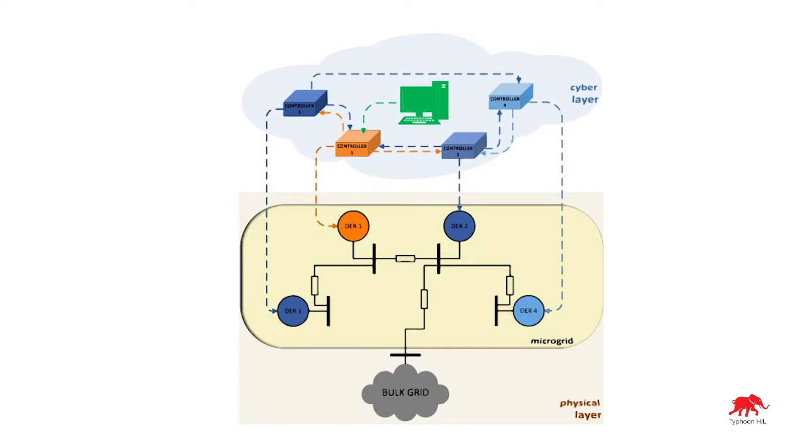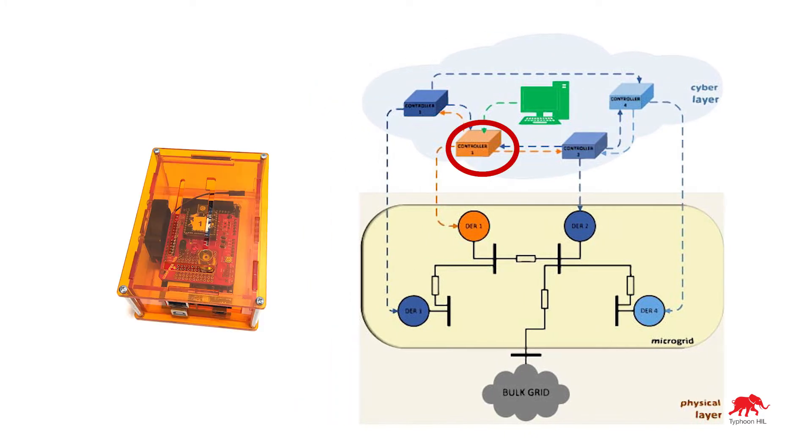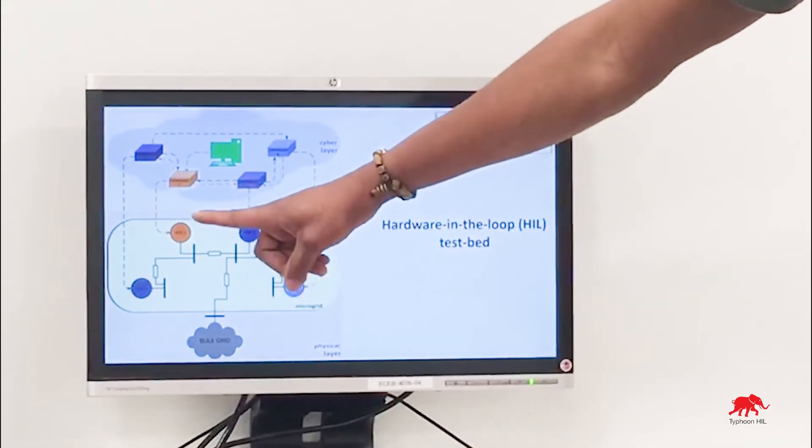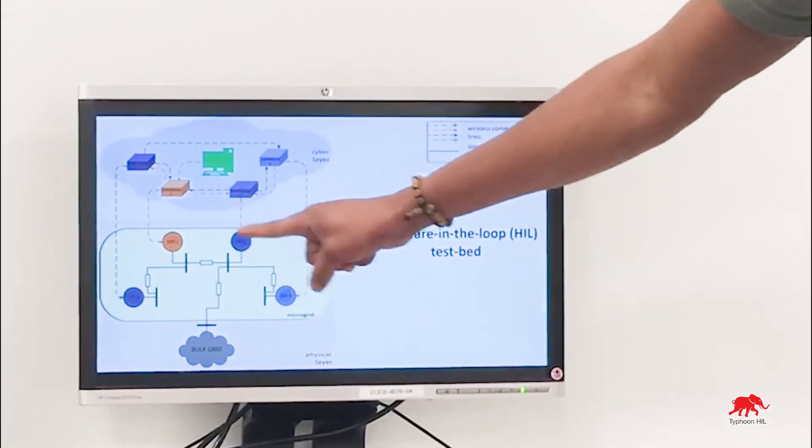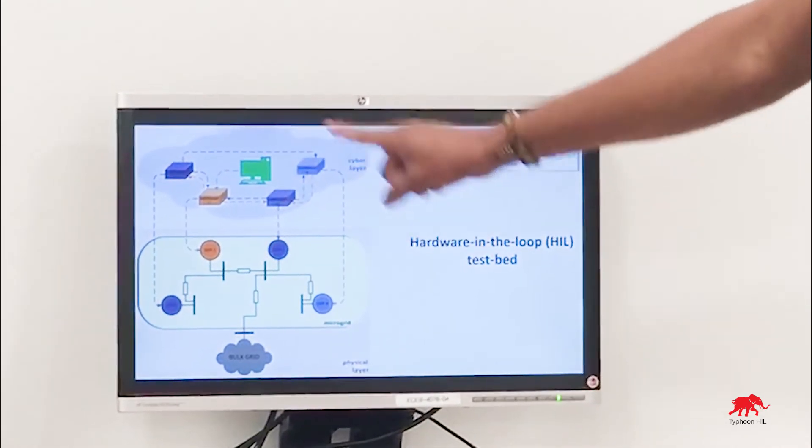In our test setup, a regulation signal is sent to the aggregator every 2 to 4 seconds and the aggregator communicates this regulation signal to a leader node which we have color-coded orange. When the leader controller receives the regulation signal, a ratio consensus algorithm is initiated on all the controllers.